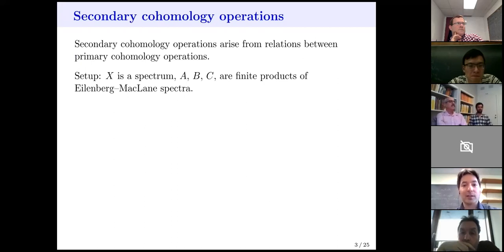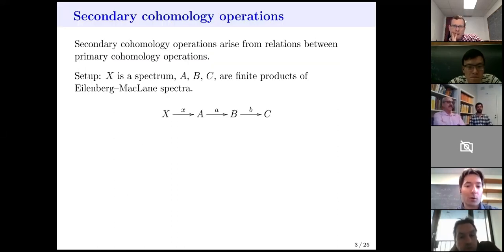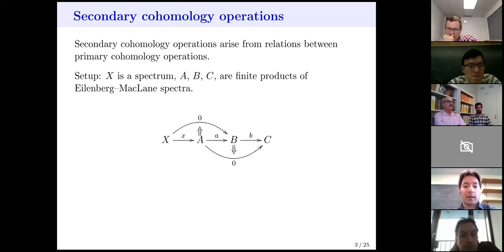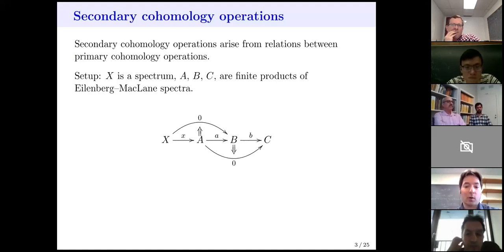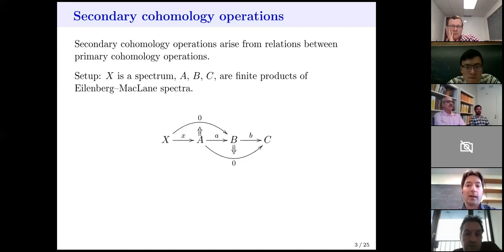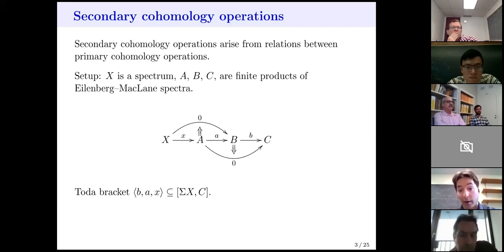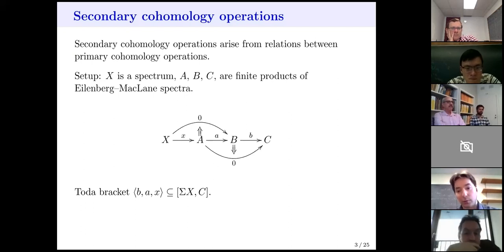Let's look at the setup. Take your favorite spectrum X, and three Eilenberg-MacLane spectra, or finite products thereof. Look at a diagram where you have a cohomology class of X, a primary operation acting on it, and another primary operation. Assume moreover that the twofold composites are null homotopic — A and B satisfy a relation. You can pick a null homotopy as on this diagram. And if A kills the cohomology class X, you can pick a null homotopy as on the picture. In that setup, you get a total bracket — a threefold total bracket — which you can view as a subset of homotopy classes of maps from the suspension of X into the last spot of the diagram.